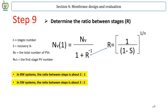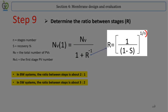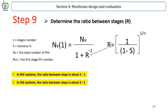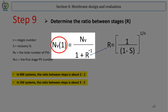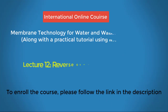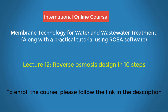The ideal staging of a system is such that each stage operates at the same fraction of the system recovery, provided that all pressure vessels contain the same number of elements. The staging ratio of a system with n stages and a system recovery can then be calculated with this equation. The number of pressure vessels in the first stage can be calculated with the staging ratio from the total number of elements.